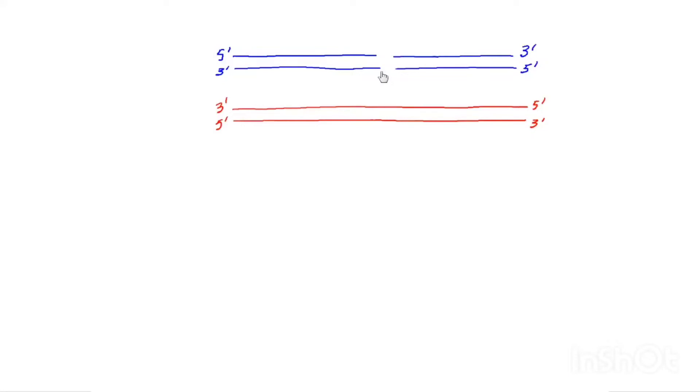Indeed, what the exonuclease will do is chew back DNA to leave 3' protruding ends. So I'm going to have my nuclease come in and create 3' protruding ends.